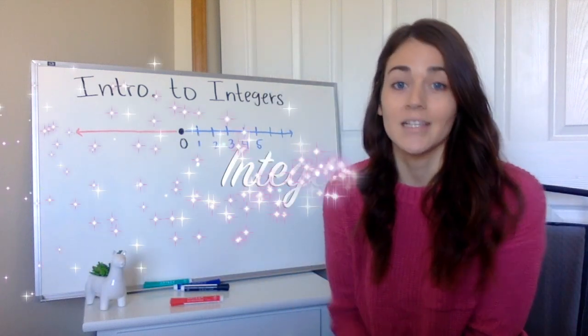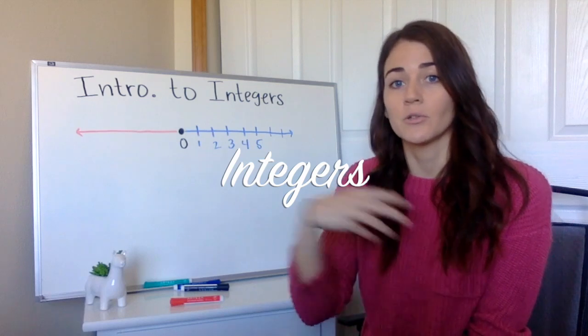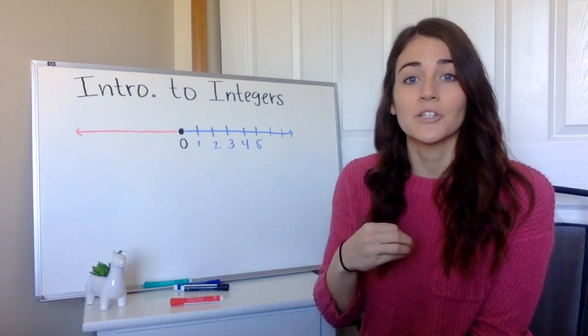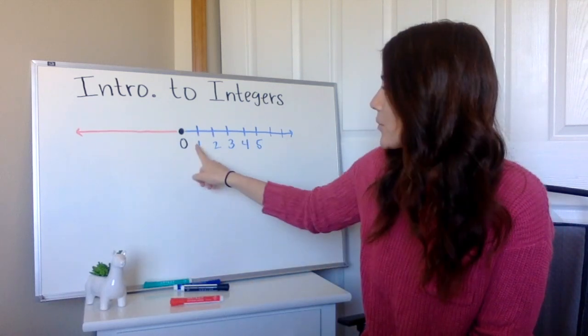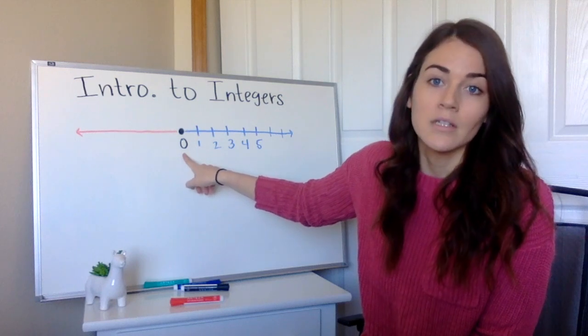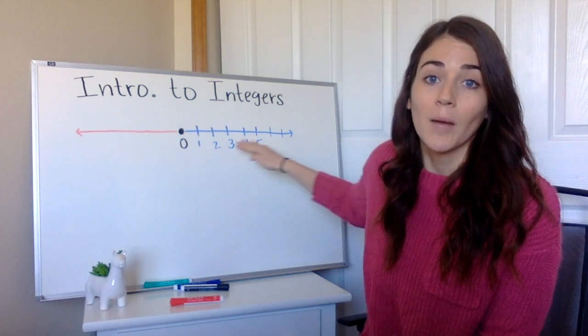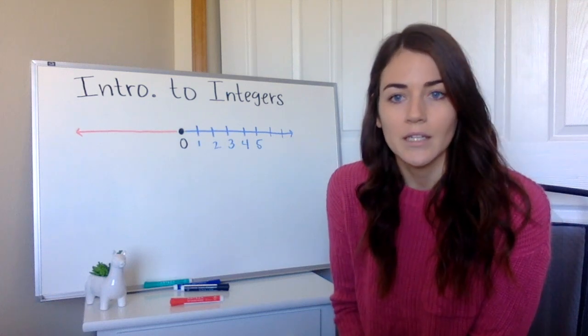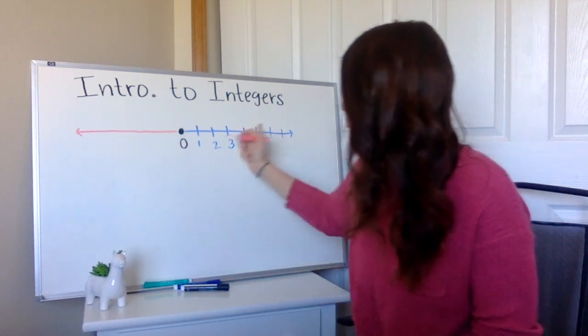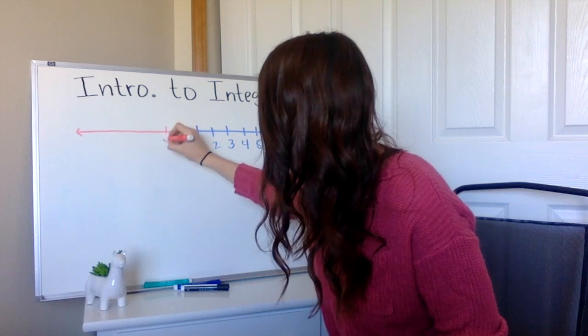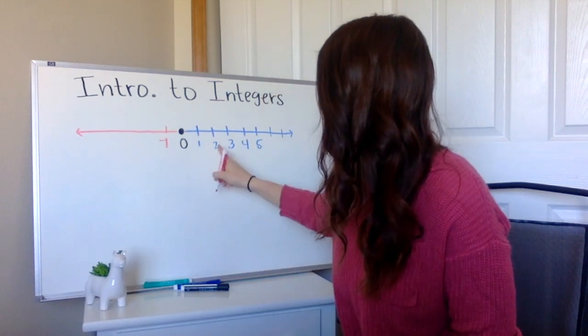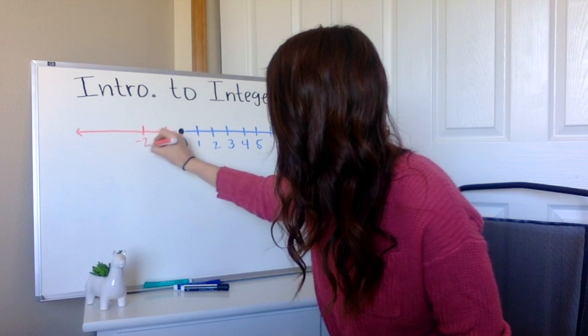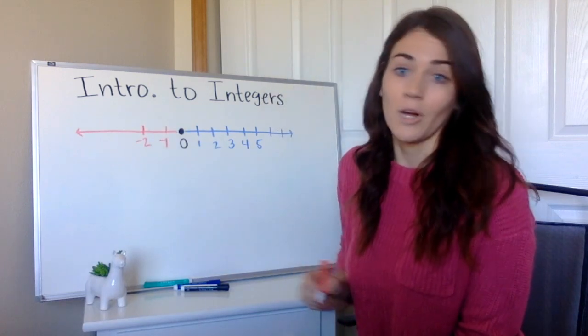Now we're ready for integers. Integers, just like how whole numbers included all the counting numbers, integers is going to include all of our counting numbers, our whole numbers, and all of our opposite counting numbers. So what I mean by opposite, we have a positive one, we have a negative one, we have a positive two, we have a negative two, and so on.